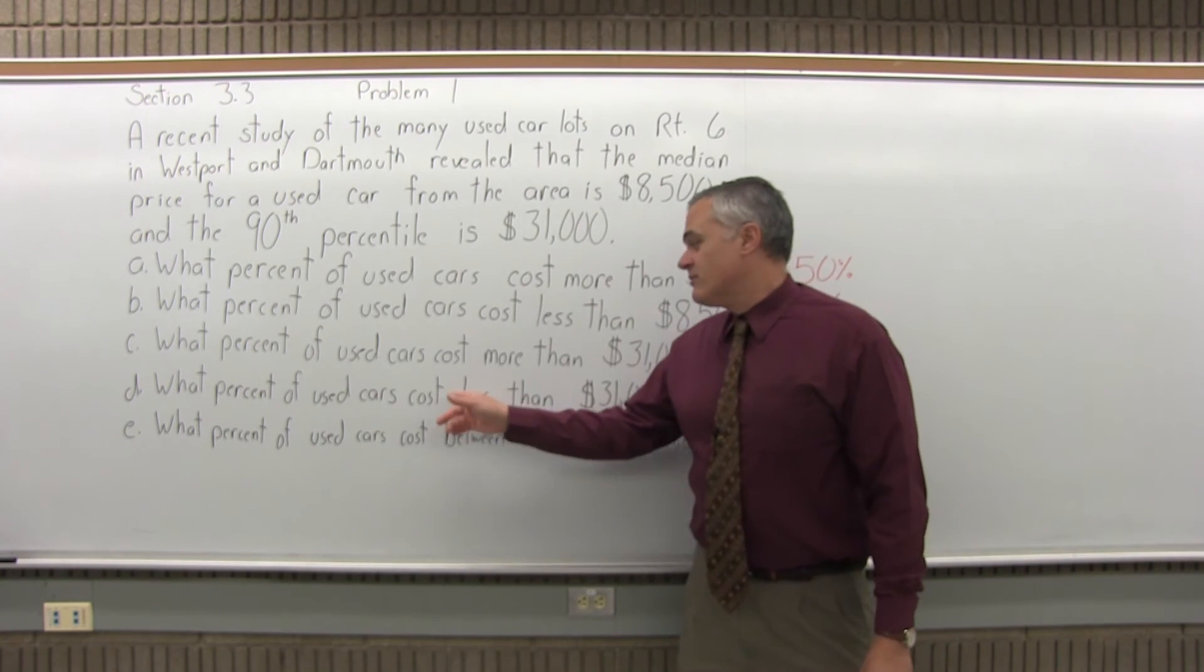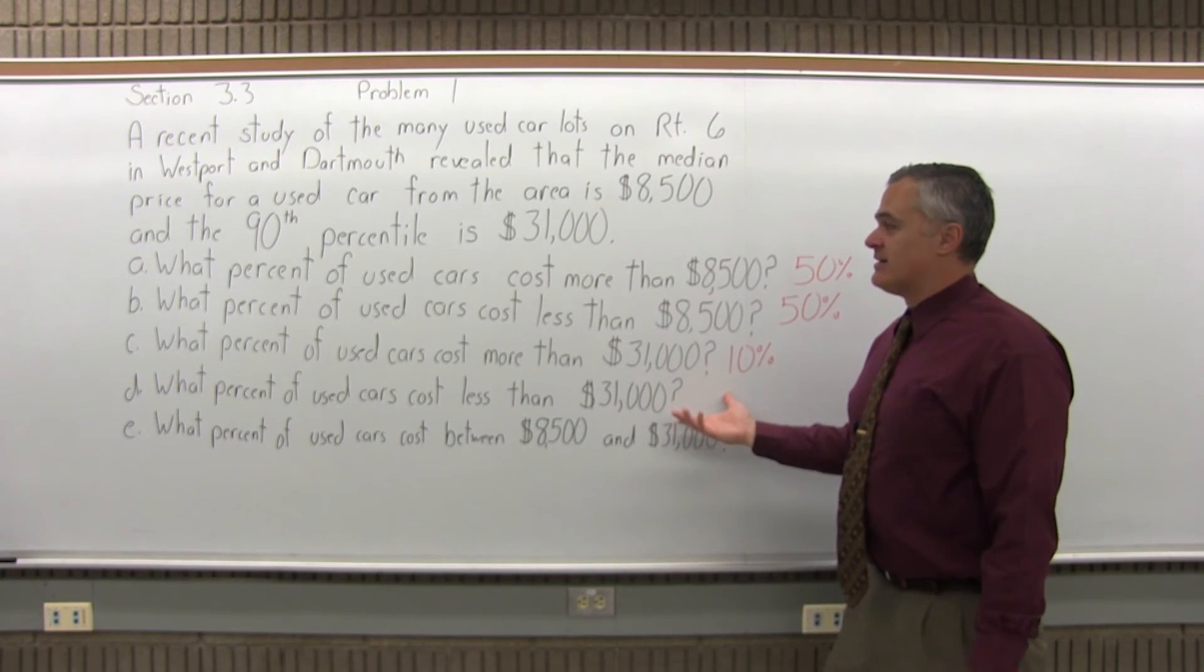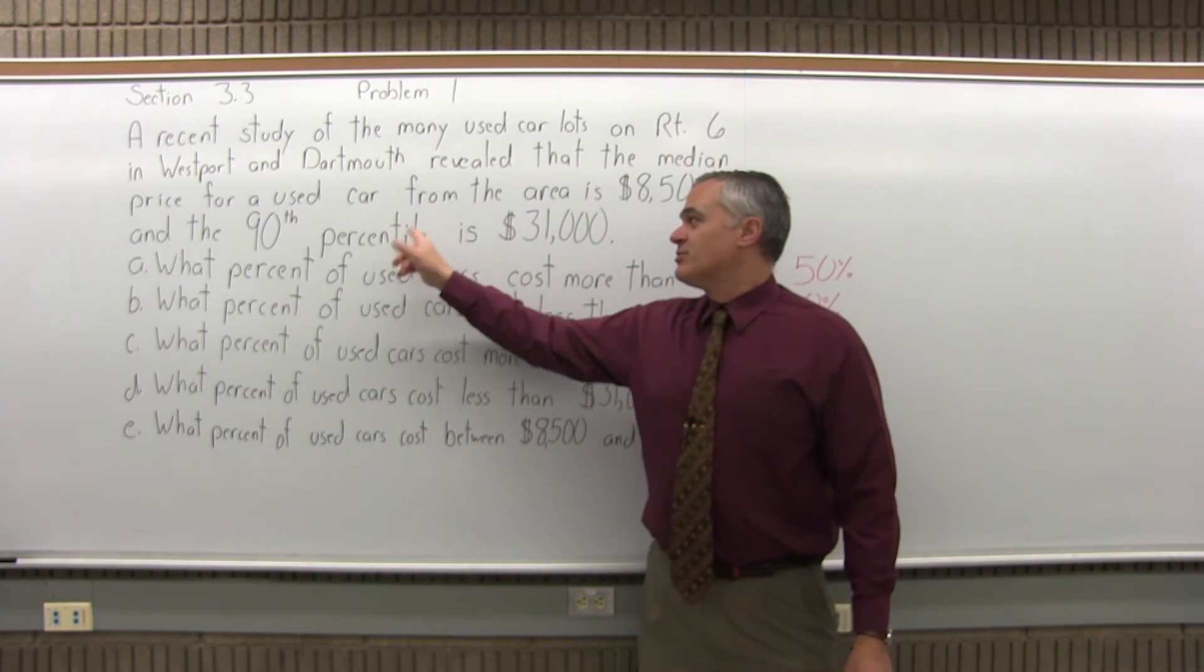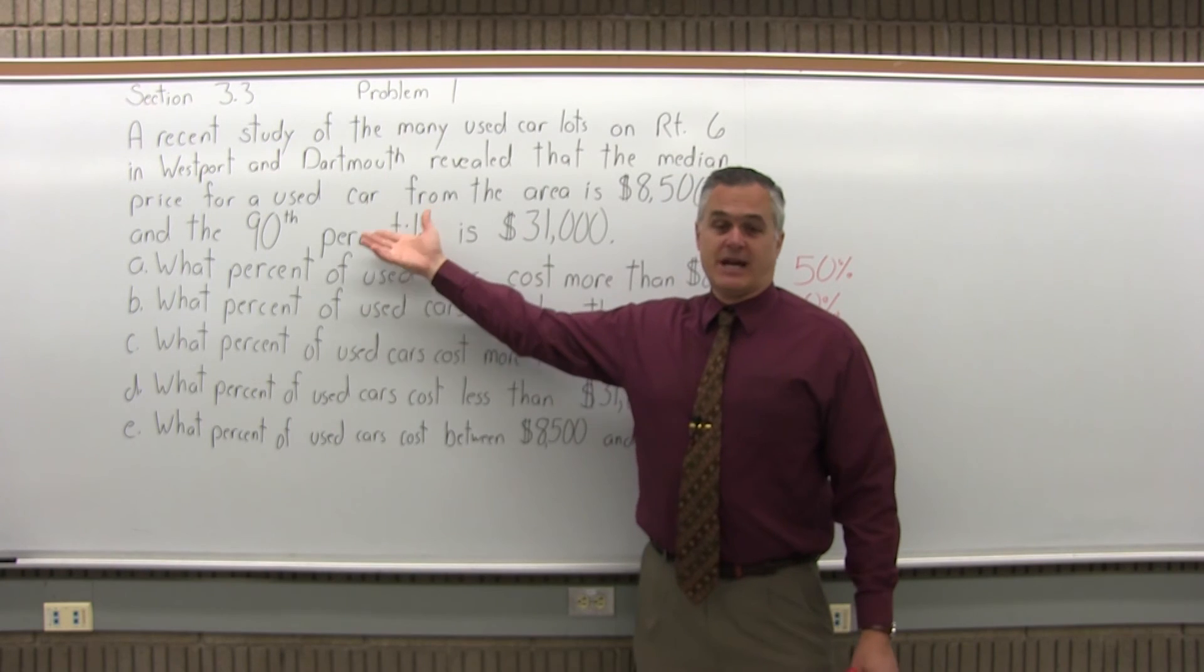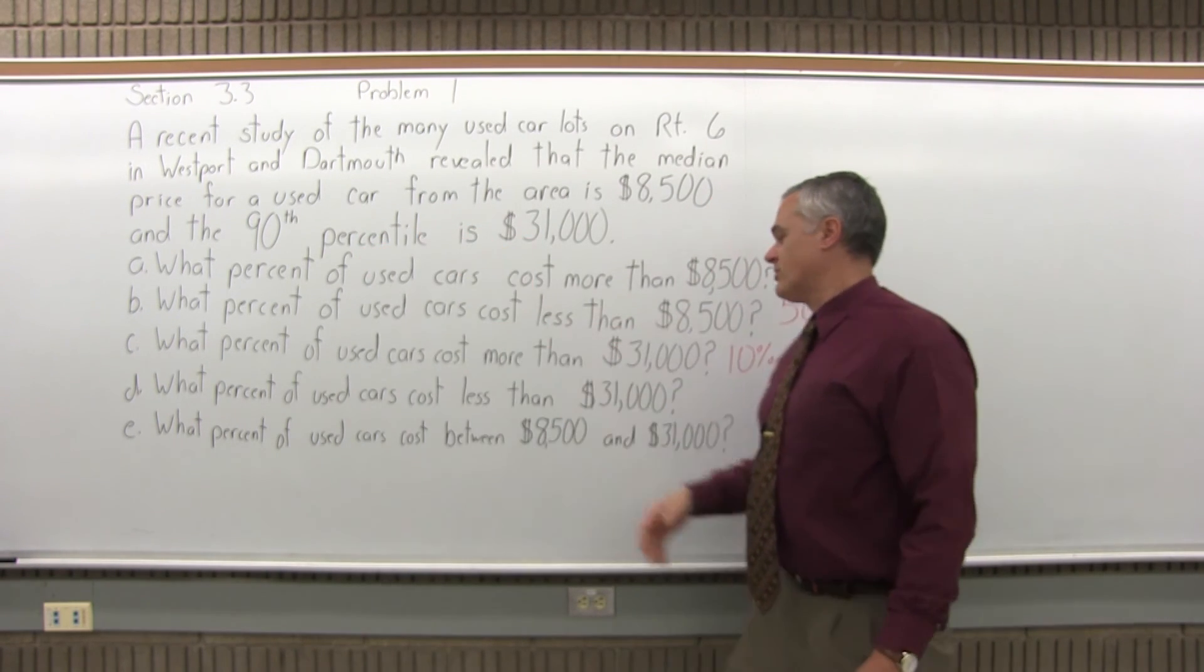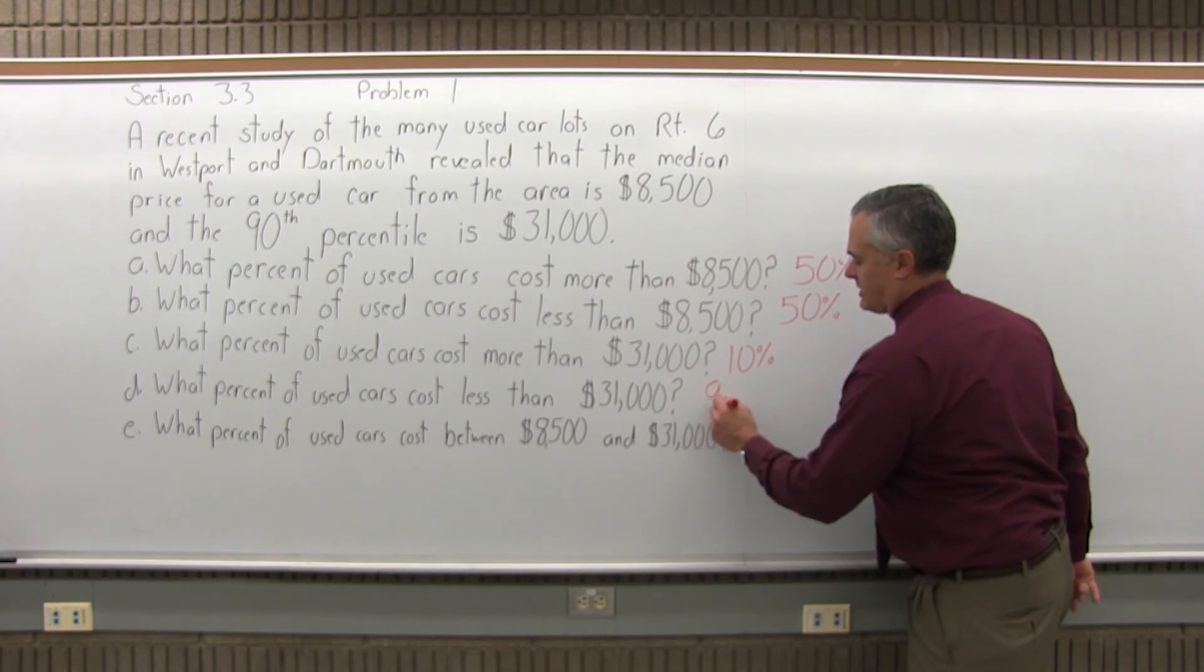Then Part D, what percent of used cars cost less than $31,000? We just said that the 90th percentile for $31,000 means that 90 percent of the cars are cheaper than $31,000. So 90 percent cost less than $31,000.